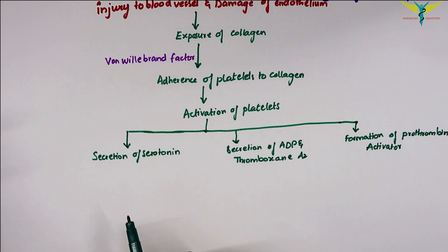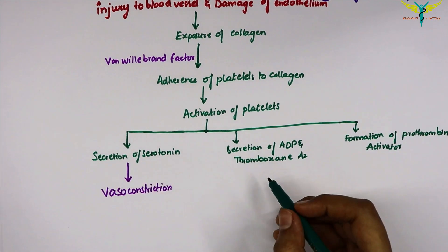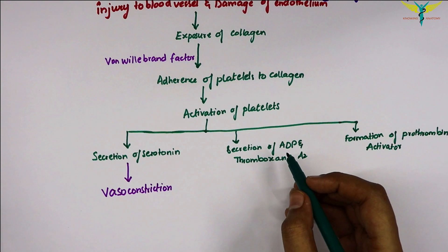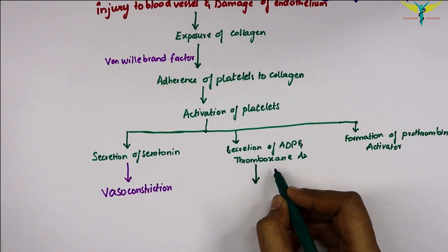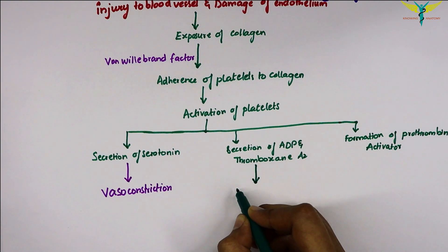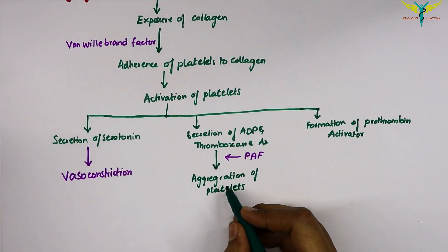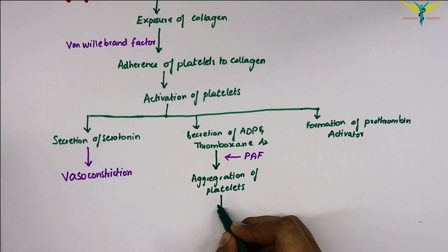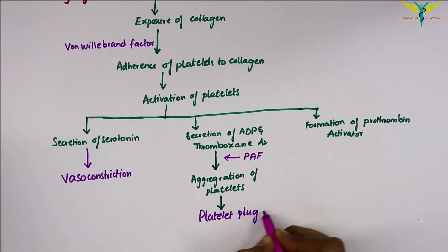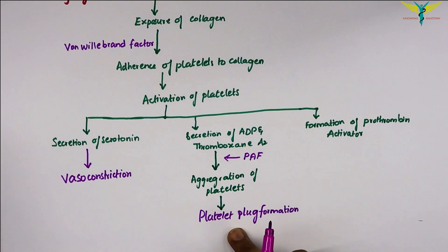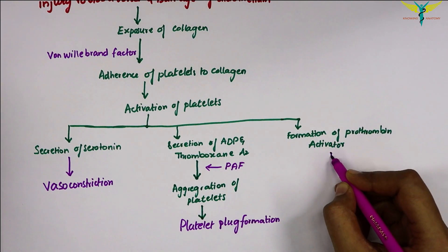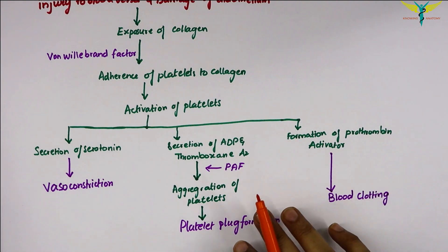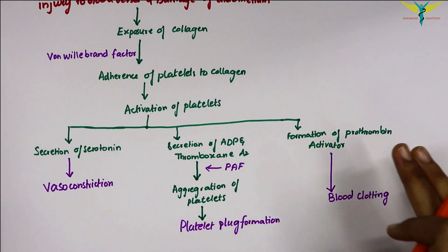The secretion of ADP and thromboxane A2 leads to aggregation of the platelets by the action of the platelet aggregating factor. This aggregation of platelets leads to the formation of the platelet plug, which is the second stage of hemostasis. The formation of the prothrombin activator leads to blood clotting, the third stage.